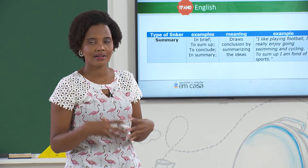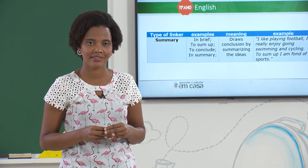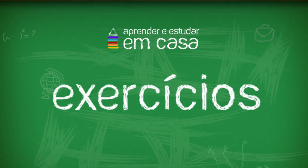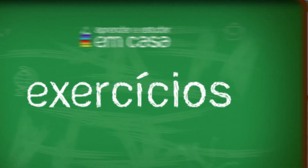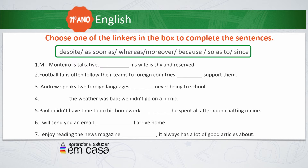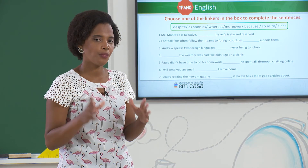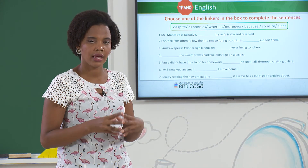We have seen a couple of examples of linkers and how to use them. It is time to do some practice. Exercise 1: Choose one of the linkers in the box to complete the sentences. In the box we have: despite, as soon as, whereas, moreover, because, so as to, since. As you have probably noticed, they are different types of linkers. So pay attention to the meaning of each sentence and try to complete them.